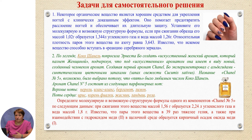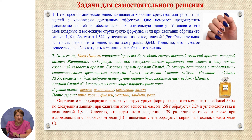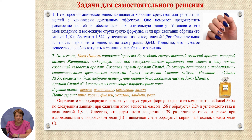If you wish to improve your skills, we offer two problems for independent solution. Problem 1: a certain organic substance is a good agent for strengthening nails with a clinically proven effect — it helps prevent nail splitting and provides long-lasting protection. Establish its molecular and possible structural formula if, when burning a 1.02 g sample, 1.344 L of CO₂ and 1.26 g of water are formed. The relative vapor density by nitrogen is 3.43. The substance is known to undergo the silver mirror reaction.